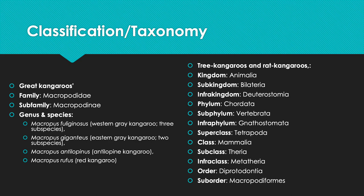The full classification runs: Animalia, Bilateria, Deuterostomia, phylum Chordata, subphylum Vertebrata, infraphylum Gnathostomata, superclass Tetrapoda, class Mammalia, subclass Theria, infraclass Metatheria, order Diprothodontia, suborder Macropodiformes.